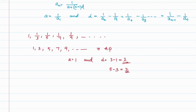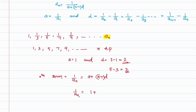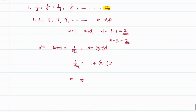So the nth term of this arithmetic progression equals 1/an, where an is the nth term of the harmonic progression. Therefore 1/an = a + (n−1)d = 1 + (n−1)×2 = 1 + 2n − 2 = 2n − 1.